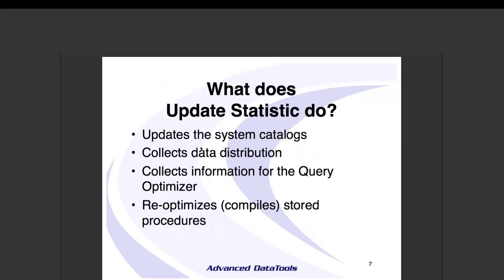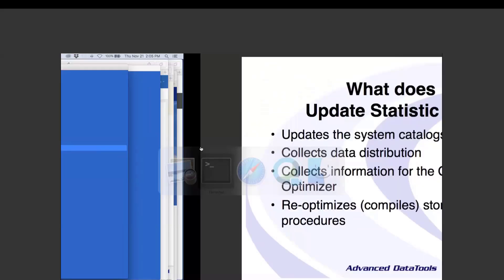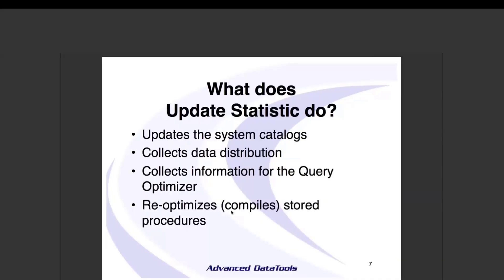What does update stats do? First, it updates the row count field in sys tables. It also collects information the query optimizer needs for deciding which tables to access first and which indexes to use. It collects data distributions — a breakdown of how your data is stored in the database. And importantly, it re-optimizes stored procedures. If a stored procedure was compiled against an empty table, over time as tables grow you need to recompile and re-optimize stored procedures to keep them current.